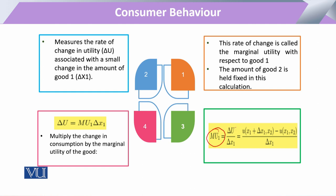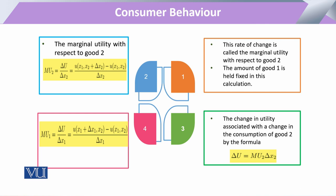Marginal utility is the change in utility with respect to the change in commodity x1. It is the utility attained by the consumer for one additional unit minus the utility the consumer had with the previous unit. When we multiply marginal utility by the change in x, we get the change in consumption utility, and the rate of that change is called marginal utility.